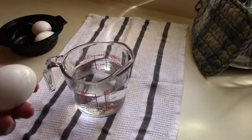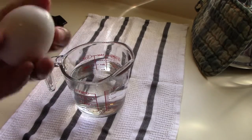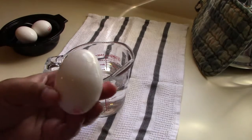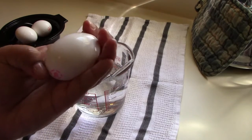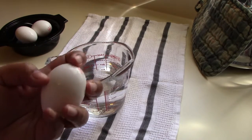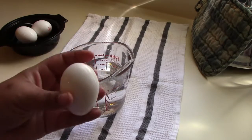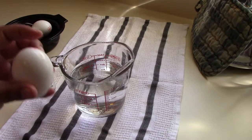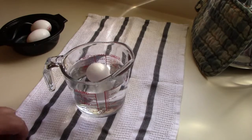And the reason behind that is that at this end, the broad end, because most eggs have a pointy end and a wide end. And at the wide end, there is an air bubble. And the older the egg gets, the bigger the air bubble gets. And because of that, that is why an egg that is old will float.